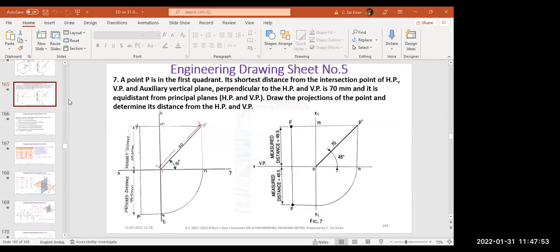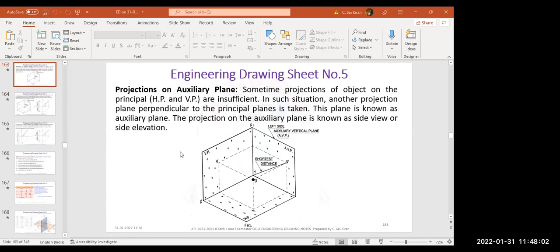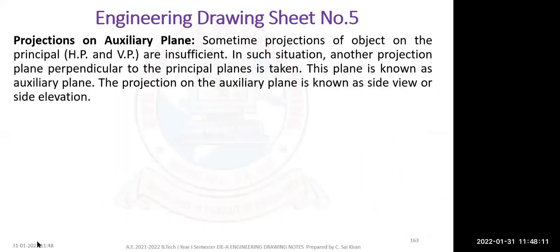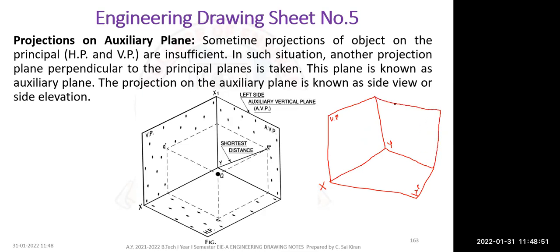I'll be explaining the seventh and tenth problems. Before starting the seventh one, you need to understand shortest distance. Here we have the vertical plane (VP) and horizontal plane (HP), with the XY line as their intersection. This XY line is infinite, but we restrict it to a start and end point. For seeing the side view, we add one more plane called the profile plane, also known as the auxiliary vertical plane.